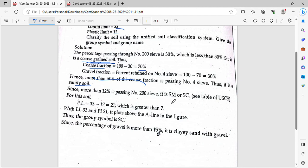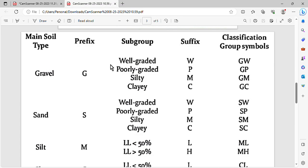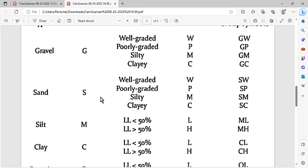What is the symbol S? We need to use the table. S is used for sand. When we look at sand, we need to determine if it's well-graded, silty, or clayey.